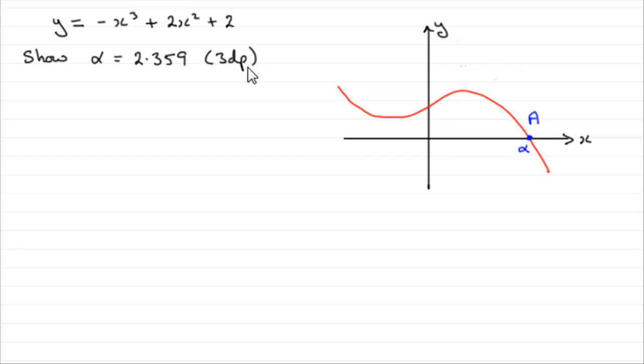And to do this, what I'm going to do is let the curve y equals some function of x, we'll call it f of x. And so in order to find or prove that alpha is a root, 2.359 to 3 decimal places, what we look for is what is called the change in sign method.